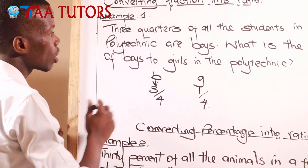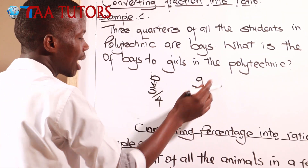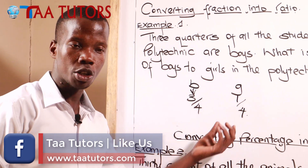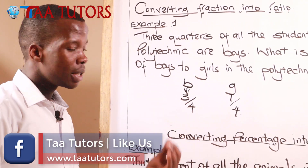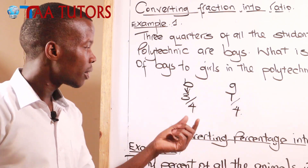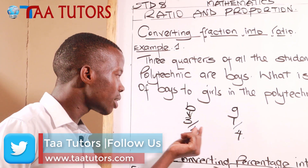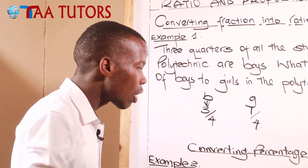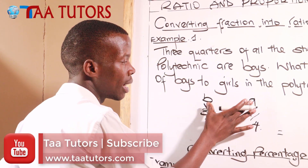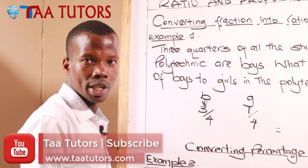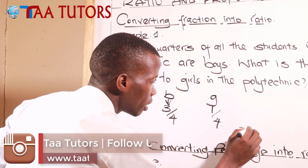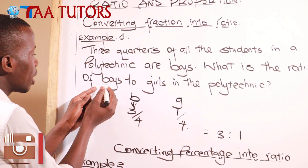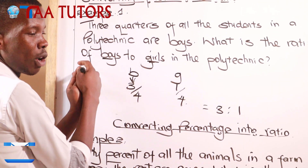Now we know the fraction of girls is one over four and the fraction of boys is three over four. We were asked for the ratio of boys to girls. This means when there are three boys, there is one girl. We use the numerators to get our ratio, so the ratio of boys to girls is three to one.